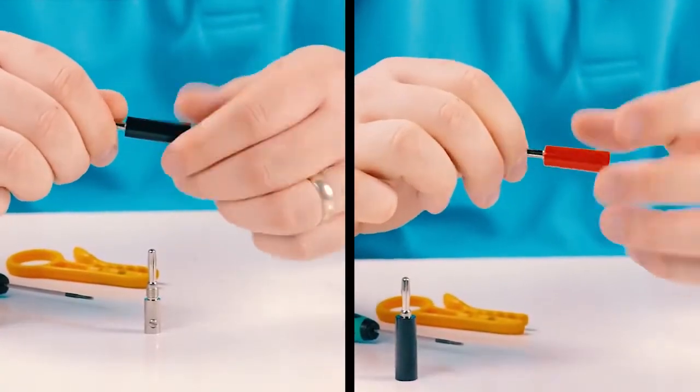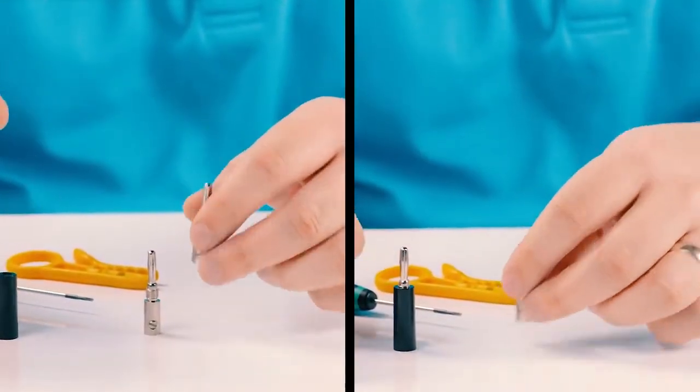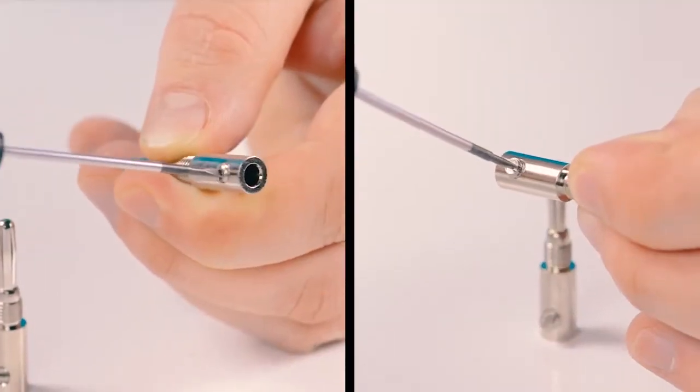Unscrew each of the banana plugs. Then using a small screwdriver, unscrew the fasteners.